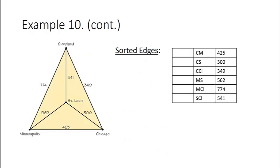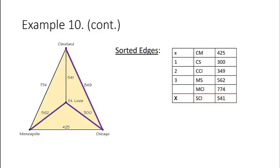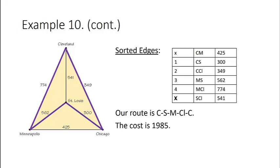Now let's use the same graph with the sorted edges method. Here is the list of all edges and their distances. We start with the smallest: Chicago to St. Louis at 300 miles. Next is Chicago to Cleveland at 349. Then Chicago to Minneapolis at 425, but we skip that edge because it would create three edges at the Chicago vertex. Next, St. Louis to Cleveland must be skipped because it would close off a circuit before visiting all cities. So we choose Minneapolis to St. Louis and then Minneapolis to Cleveland. The route is Chicago, St. Louis, Minneapolis, Cleveland, Chicago and the cost is 1,985 miles.